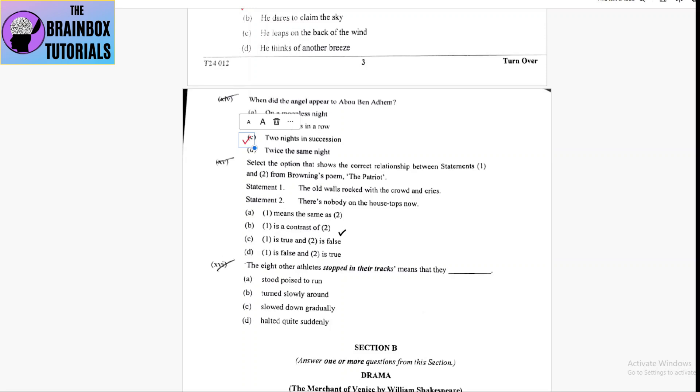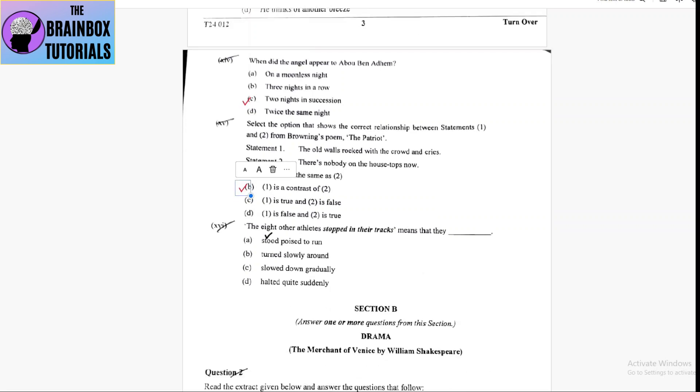Number B, one is a contrast of two. Clearly, it is a contrast. In statement one, all the people are there on the walls and statement two, the house tops are empty.